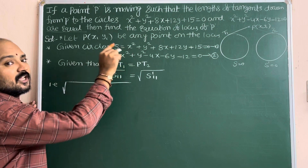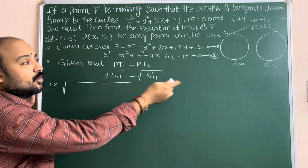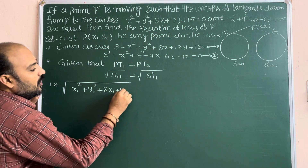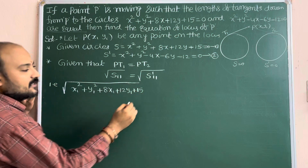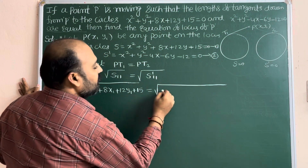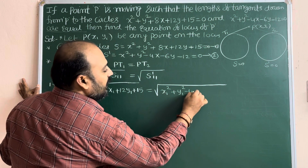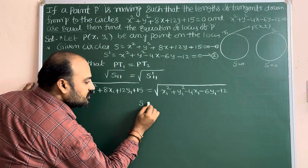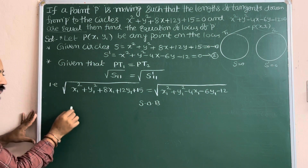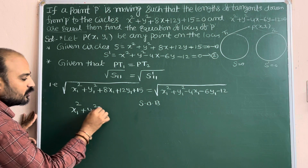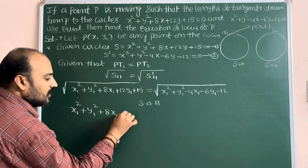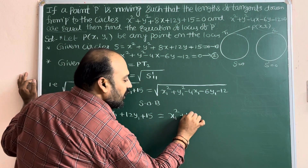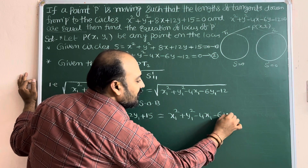Substituting into S₁₁, we get: √(x₁² + y₁² + 8x₁ + 12y₁ + 15) = √(x₁² + y₁² - 4x₁ - 6y₁ - 12). Squaring both sides to eliminate the square roots: x₁² + y₁² + 8x₁ + 12y₁ + 15 = x₁² + y₁² - 4x₁ - 6y₁ - 12.